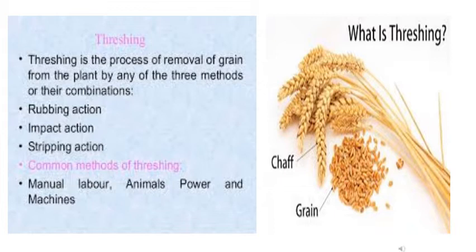Threshing is the process which follows harvesting. After the farmer has harvested the field, he will bundle the crops and they are ready for threshing. Threshing is the process of removal of grain from the plant. The grain is removed from the chaff — chaff is just the outer covering of a grain. It is done by actions like rubbing, impact, or stripping.